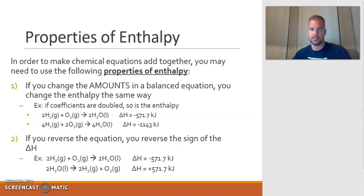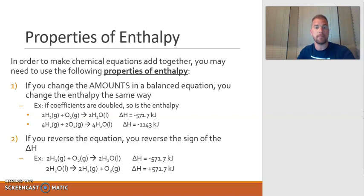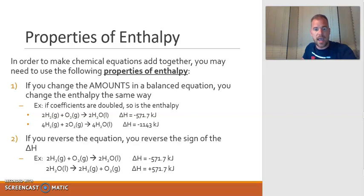Now let's look at some properties of enthalpy that will help us when we move on to Hess's law. You may need to finagle or tweak the equations so that they add up to give you the final equation you want. There are two ways to do that using the two properties of enthalpy. The first one is changing the amounts. If you change the amounts in a balanced equation, you change the enthalpy in the exact same way. For example, suppose I have this balanced equation here with coefficients 2, 1, 2, and a resulting enthalpy listed.